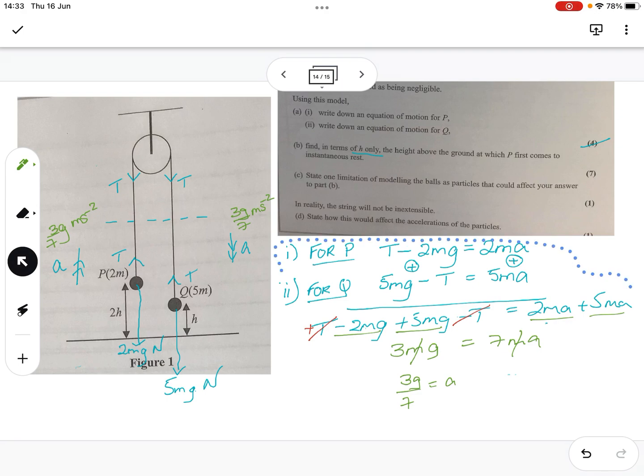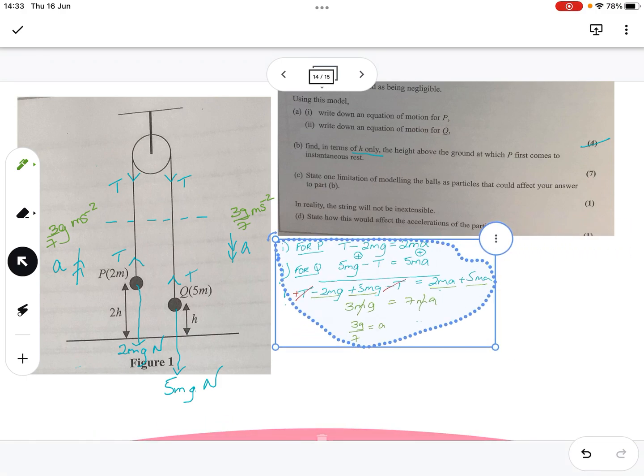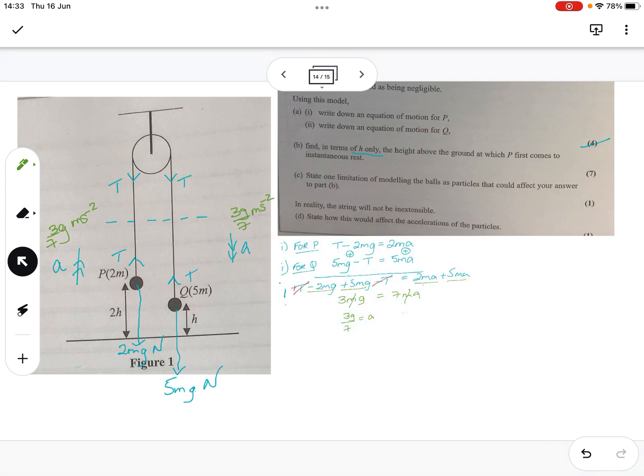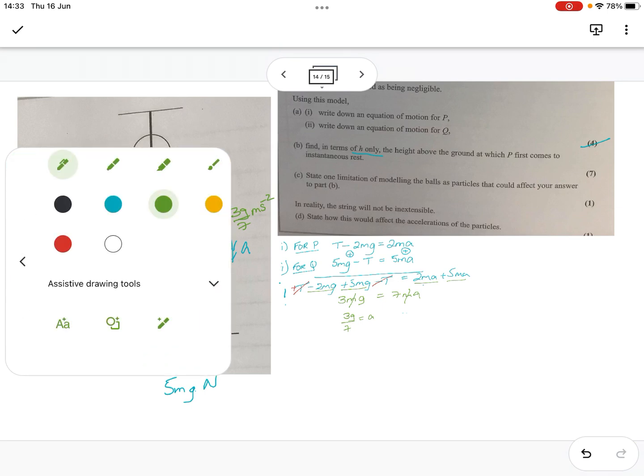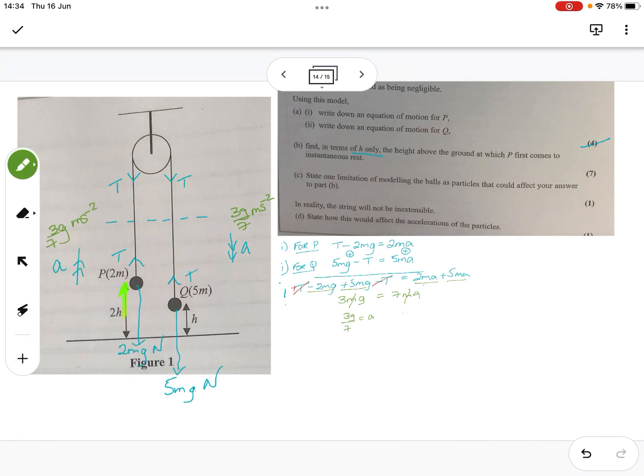So I've done question 4 and it turns out... Oh no, I've done question A and it turns out that's the first bit I need to do for the 7 marker. So good to know. So now I'm reading the 7 marker. Find in terms of H only the height above the ground, which P comes to instantaneous rest. Right, this is the classic one that people hate. So what we've got is this is 2H above the ground. We're interested just in P. So when it's all left to rest, Q is going to move down H, which means P is going to move up H. When we get to this point, so when Q hits the ground, it will be travelling at a specific velocity.